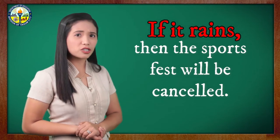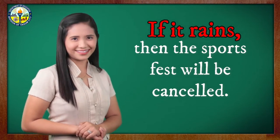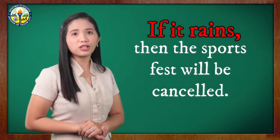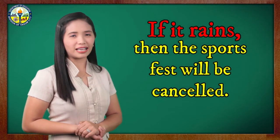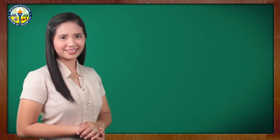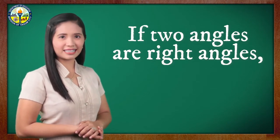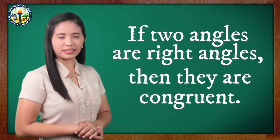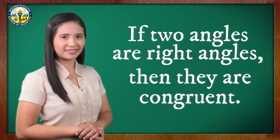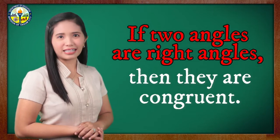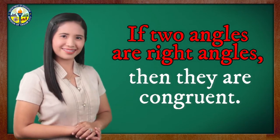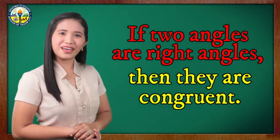What about the clause that stands for the conclusion? Very good! It is the Q clause. So the conclusion is 'The sports fest will be cancelled.' How about this example: If two angles are right angles, then they are congruent. What is the P clause or hypothesis of this statement? Yes! Two angles are right angles. What about its Q clause or conclusion? Perfect! They are congruent.